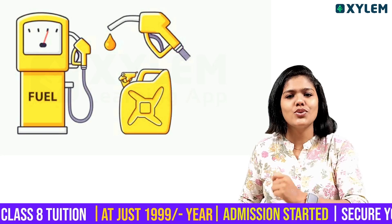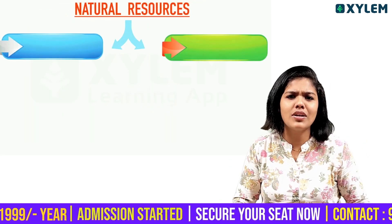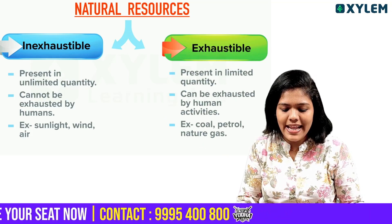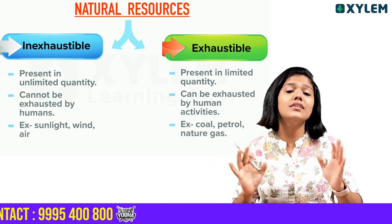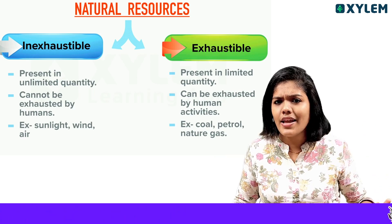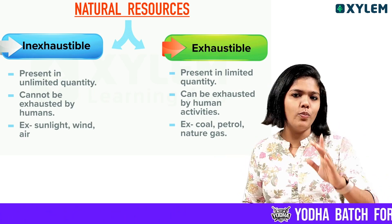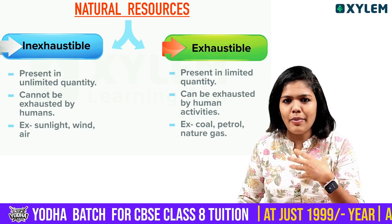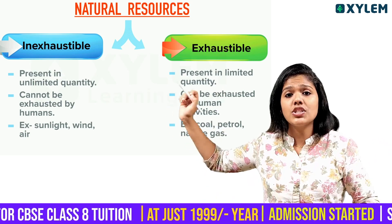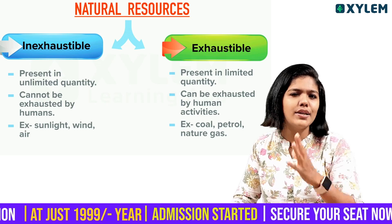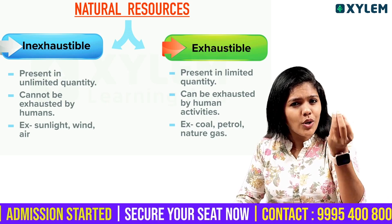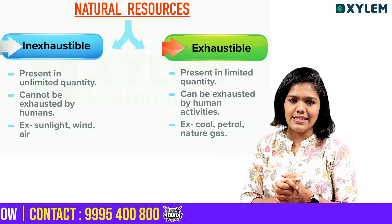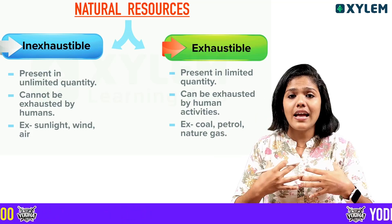Let us know the examples of natural resources. We are going to classify these natural resources as inexhaustible natural resources and exhaustible natural resources. Inexhaustible resources are present in unlimited quantity and cannot be exhausted by humans — for example, sunlight, wind, and air. Exhaustible natural resources are in limited quantities, can be exhausted by human activities, and examples are coal, petrol, and natural gases.